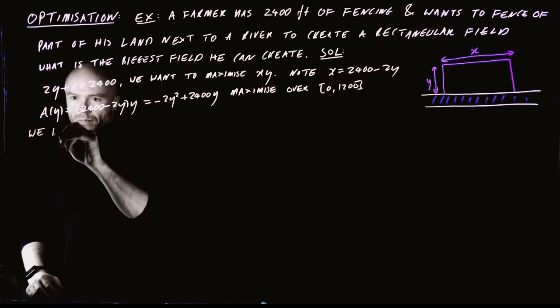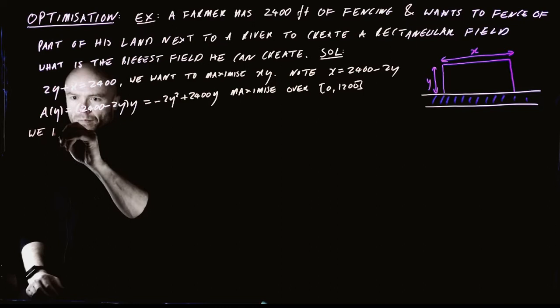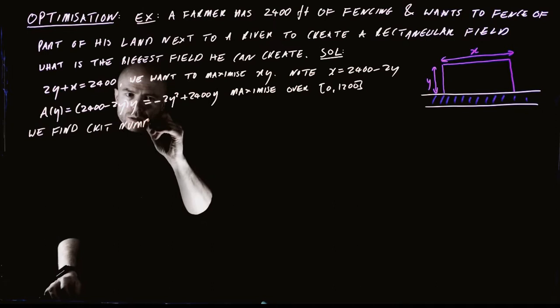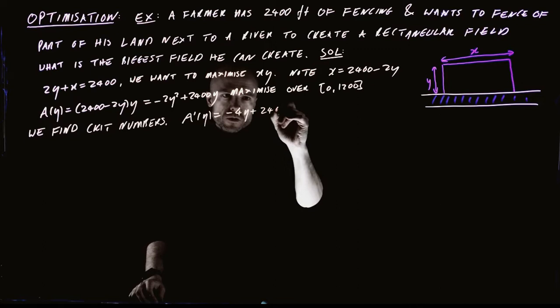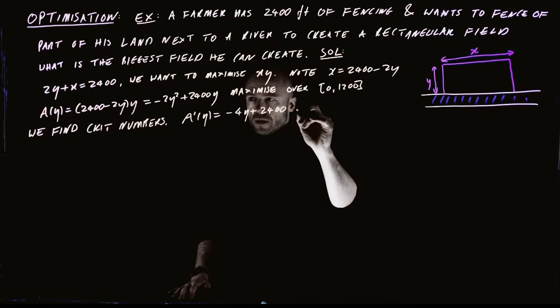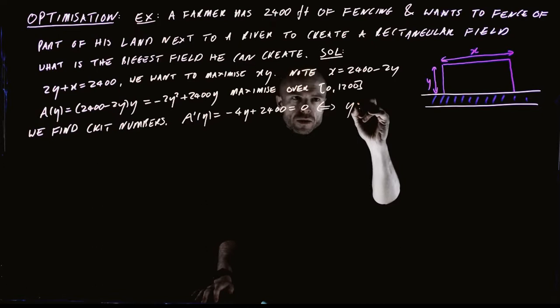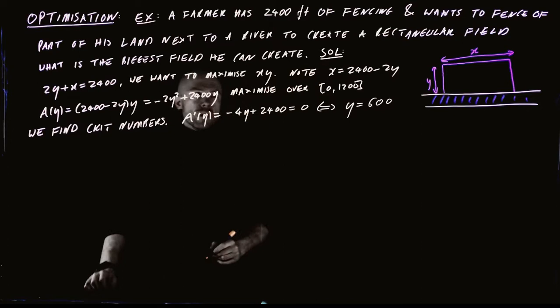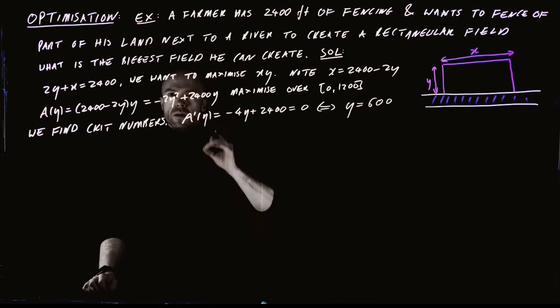We find the critical numbers by differentiation. The derivative is minus 4y plus 2,400. Setting this equal to 0 gives y equals 600. So there is only one critical number in our interval, and it is at 600.